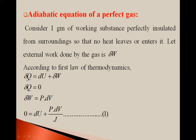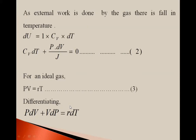The first law states that when a small amount of heat del Q is supplied to a system, a part of the heat is used to increase internal energy and a part is used to do external work done. So del Q equals the sum of increasing internal energy and work done. Here del Q is zero, and del W is P dV — work done by the gas. So putting del Q equals zero: 0 = du + P dV / J. As external work is done by the gas, there is a fall in its temperature.